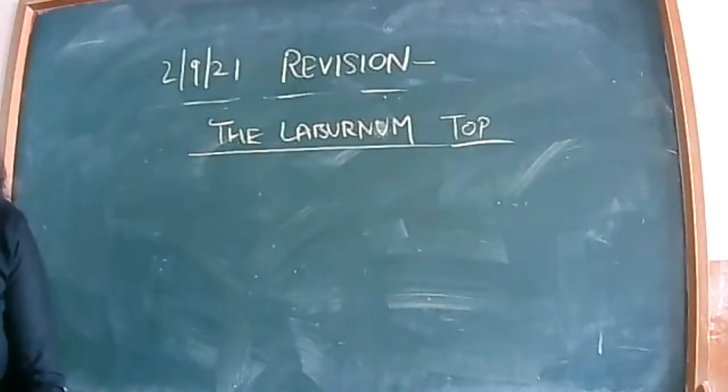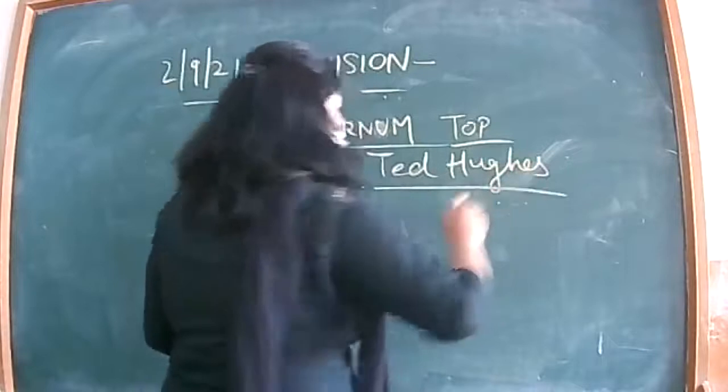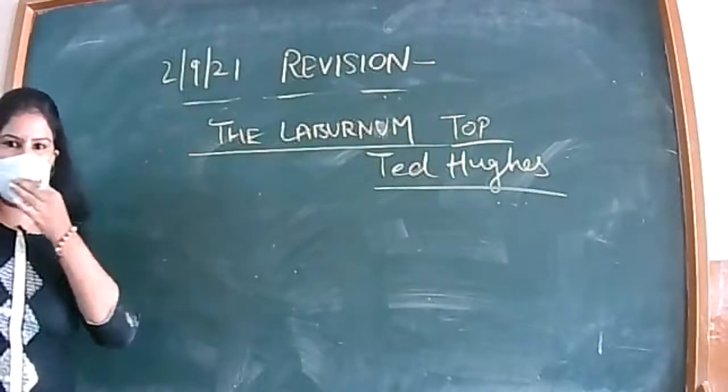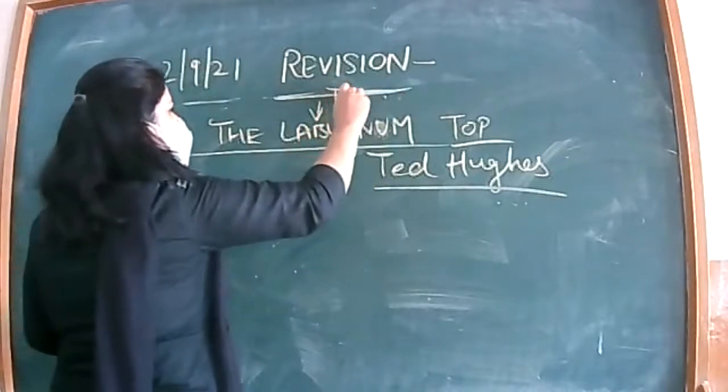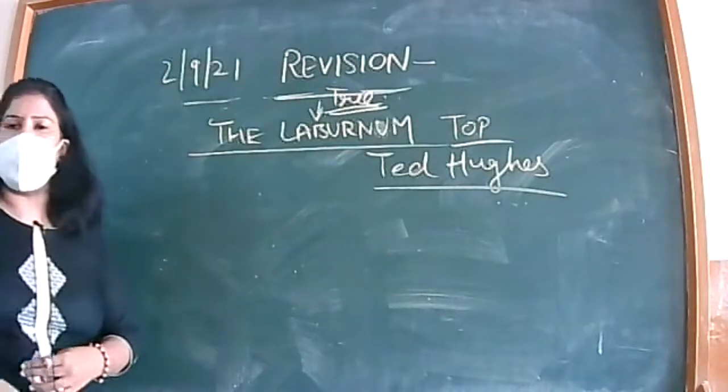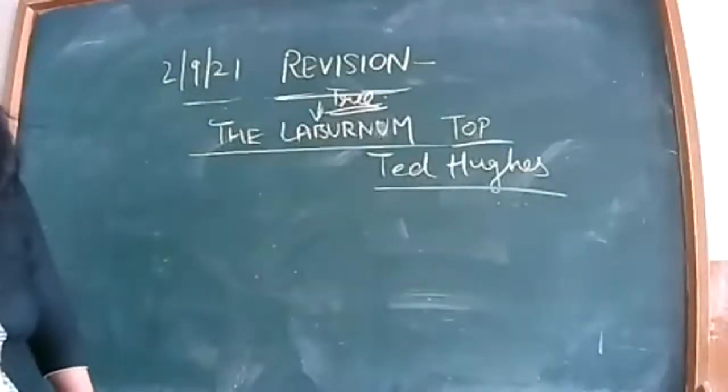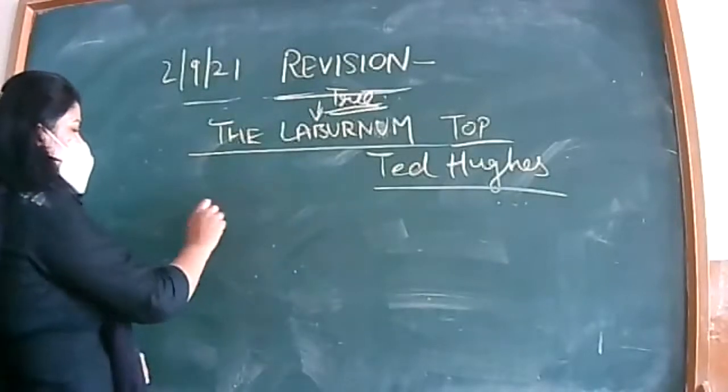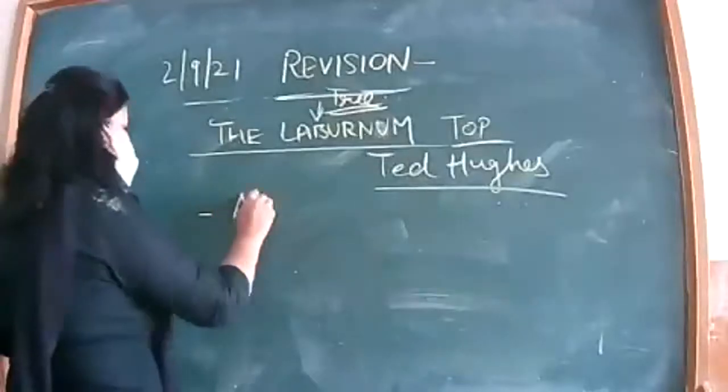First of all, you should know the name of the poem as well as name of the poet. The laburnum top. It is written by Ted Hughes. Firstly, learn the name of the poet - Ted Hughes. So what is laburnum? It is a tree. They are going to talk about the top of the tree. It is not about the top only, but they are going to tell us a deeper meaning is there in this poem.